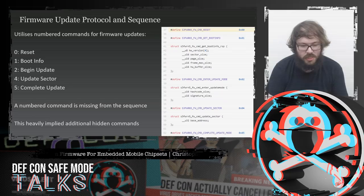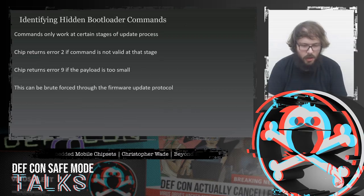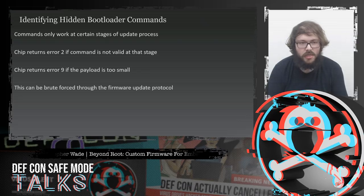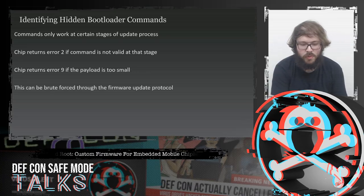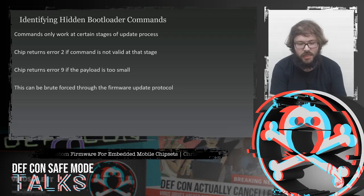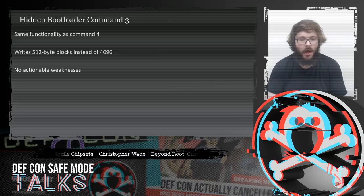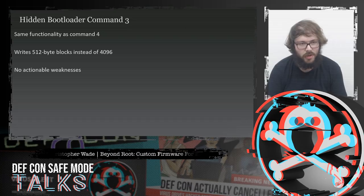I noticed that command 3 was missing from the sequence, implying there were likely hidden commands. Since commands only work at certain stages of the update process, I brute-forced through the entire firmware update process while trying different commands to find how they worked. The chip returned error 2 if the command was not valid or not valid at that stage, and returned 9 if the payload was too small. I found that hidden command 3 had the same functionality as command 4 except it wrote 512-byte blocks instead of 4096 bytes — no real actionable weaknesses.